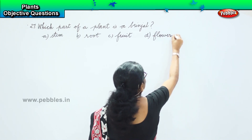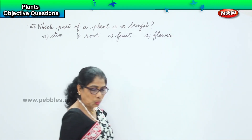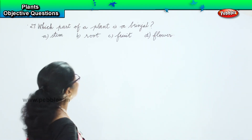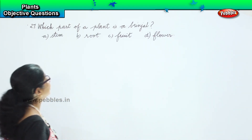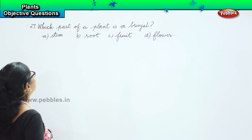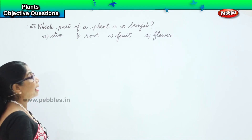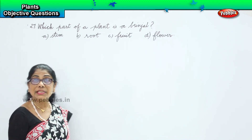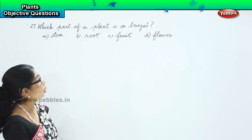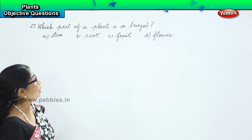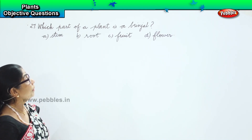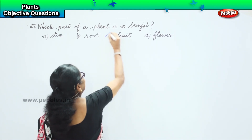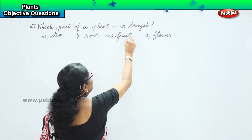They are asking us which part of a plant is a brinjal. Is it a stem? No. Is it a root? No. Is it a flower? No. Brinjal — the answer is C, it is a fruit.